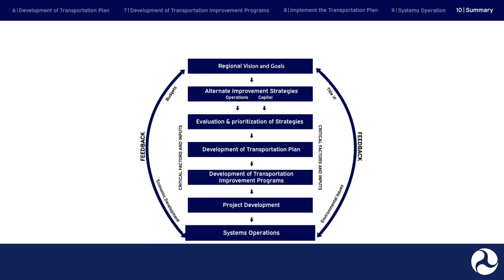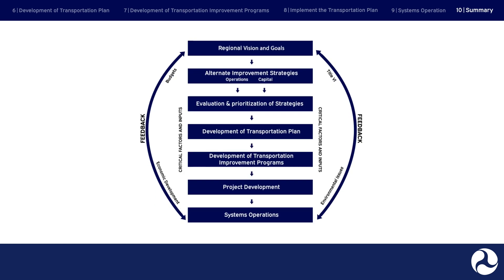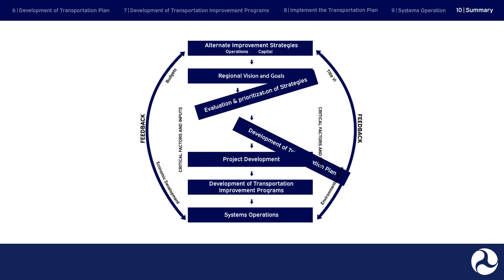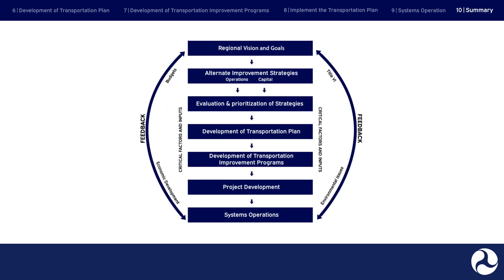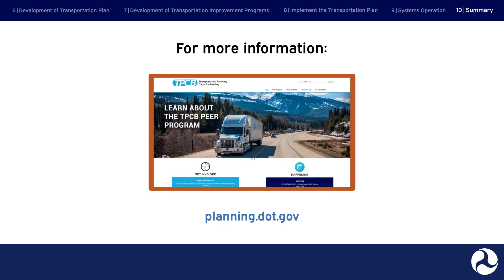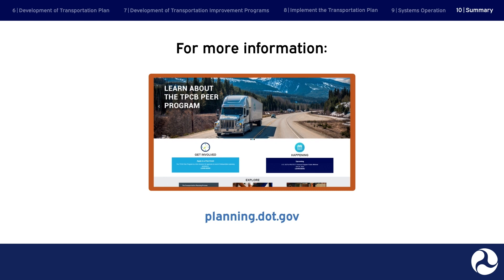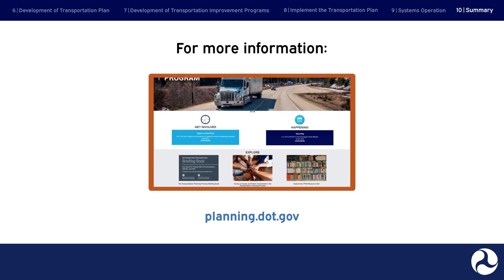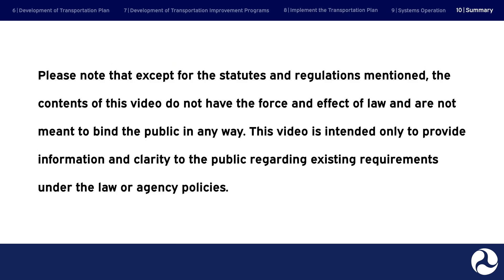Summary. The transportation planning process can vary across organizations and geographies. It does not always follow a linear path, and there are often unexpected complexities that arise as the process unfolds. However, the planning process outlined in this video provides a generalized description that can help familiarize you with a typical process that you may encounter at a transportation planning organization. For more information about this topic or any other topic in this video series, please visit the Transportation Planning Capacity Building website at planning.dot.gov. Please note that except for the statutes and regulations mentioned, the content of this video does not have the force and effect of law and is not meant to bind the public in any way. This video is intended only to provide information and clarity to the public regarding existing requirements under the law or agency policies.